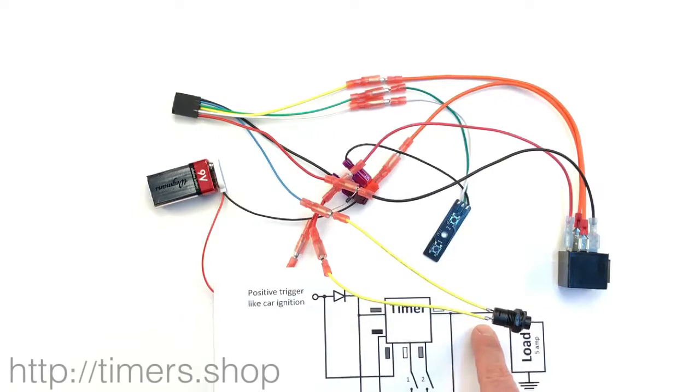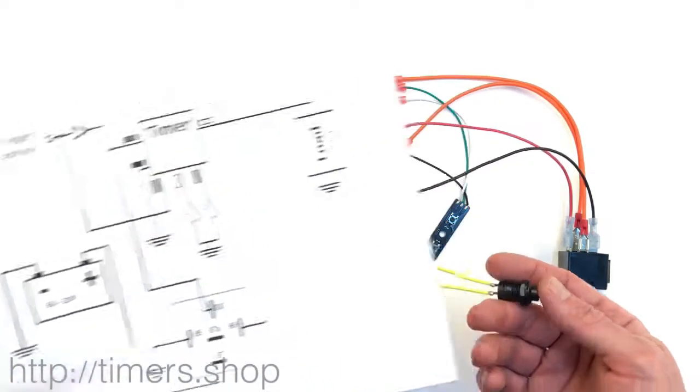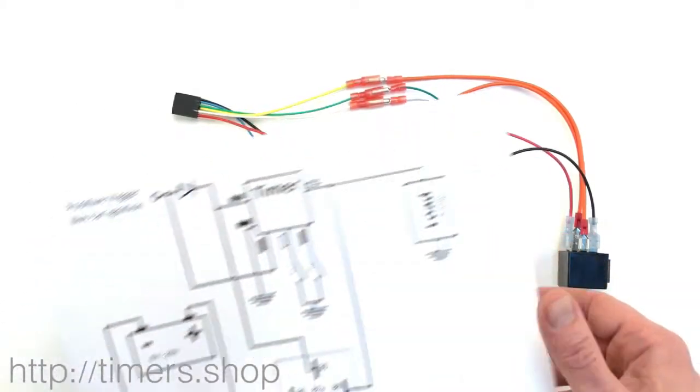When we supply the ignition on, we turn the circuit on and it stays on for a period of time. Again we supply the trigger and it stays on for a period of time.